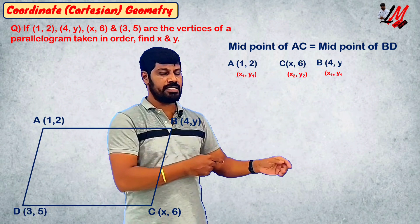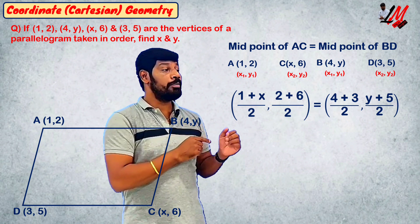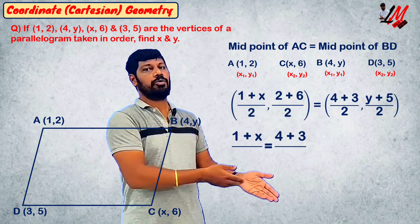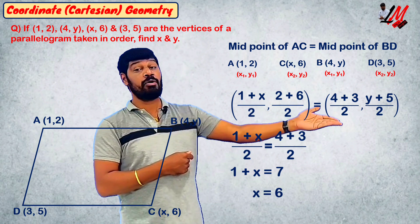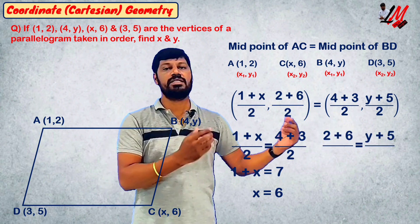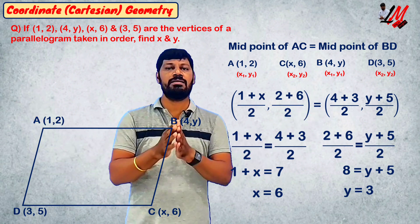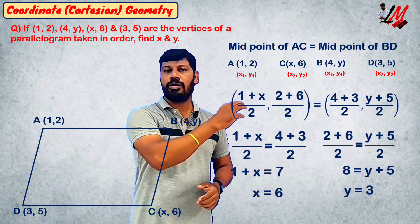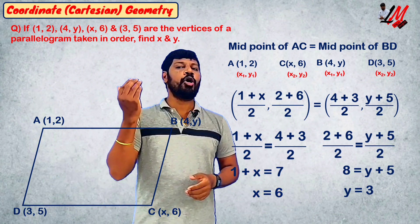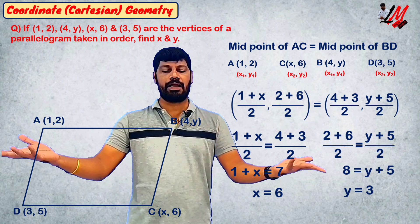We substitute the midpoint formula. We get two equations with two variables. From the x-values, we solve for x; the y-values are numerical. Solving the two equations gives us the values of the variables. In this parallelogram, diagonals are bisected, which means midpoint of AC equals midpoint of BD, and ABCD is the parallelogram.